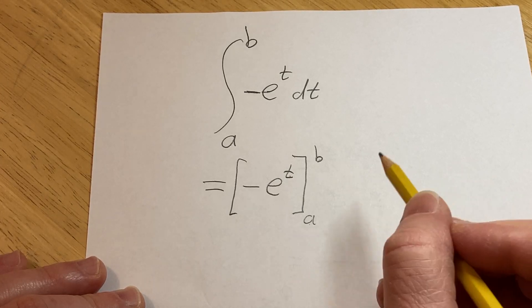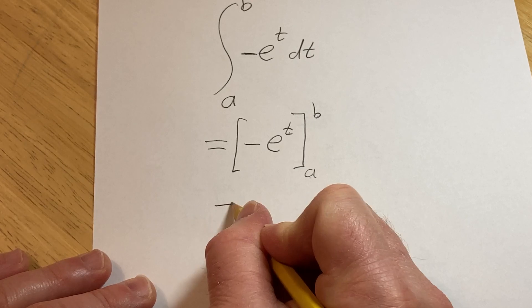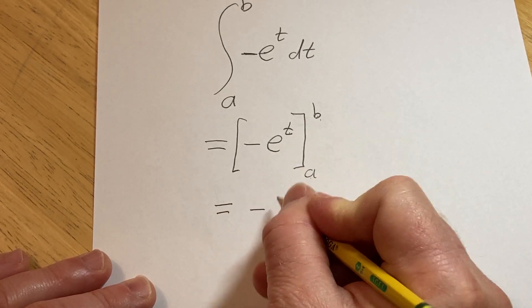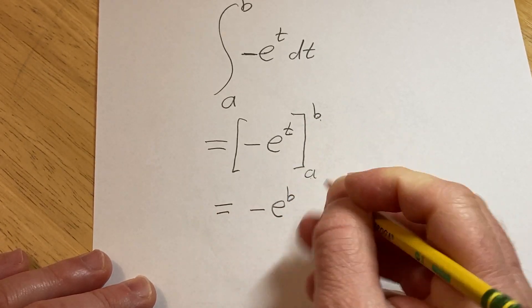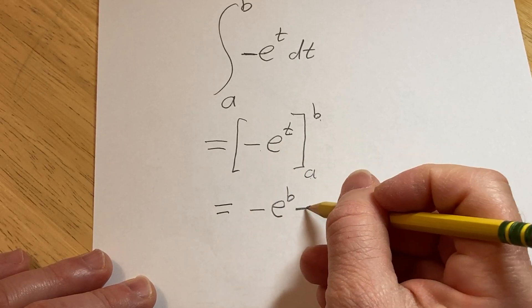I just realized that there is a place where people might mess up, so I'm going to carefully explain that. So first you plug in the b, so you get minus e to the b, and then minus. And then there's another minus here, right?